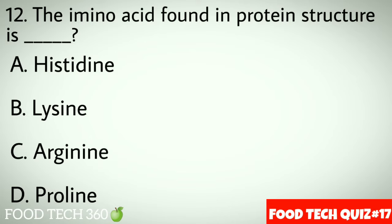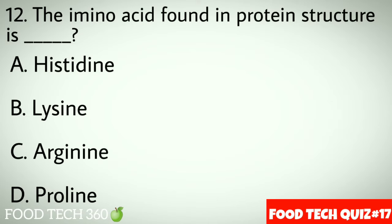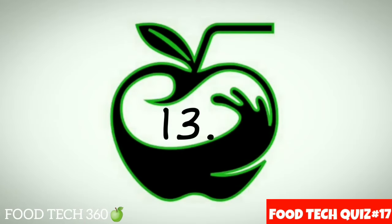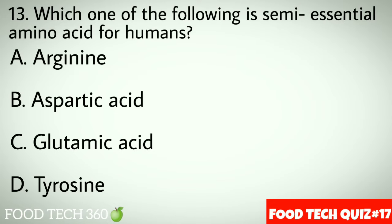Question number 12: The amino acid found in protein structure is dash. Options: A. Histidine, B. Lysine, C. Arginine, D. Proline. Correct answer: D. Proline.